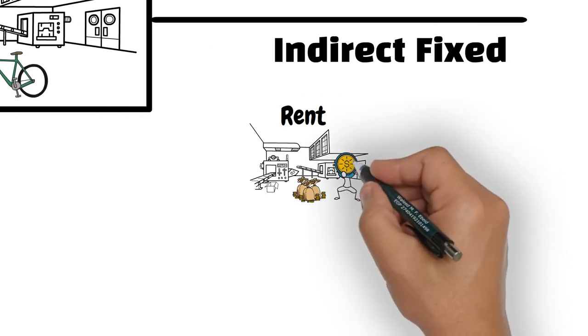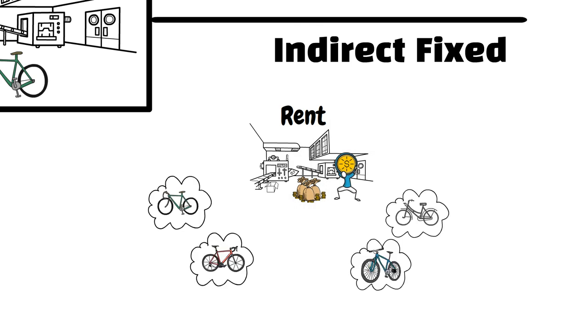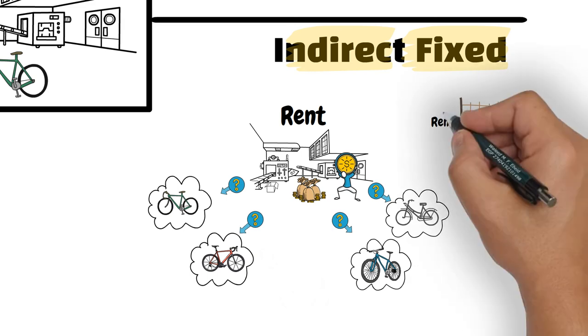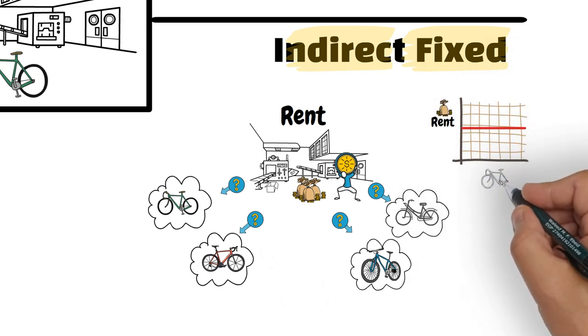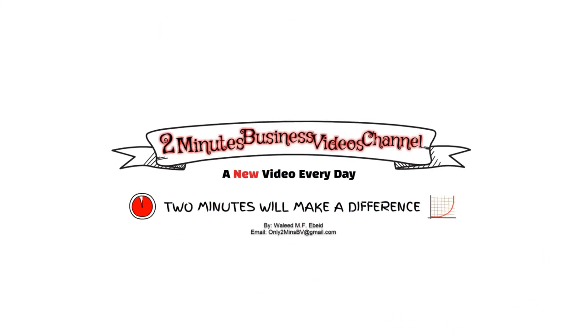The factory rent where various models of road bikes are produced is an indirect-fixed cost. It is an indirect cost because it cannot be easily traced to the various models of the bikes produced. And it is a fixed cost because rent is a fixed payment that is made periodically regardless of the number of bikes produced in that factory.